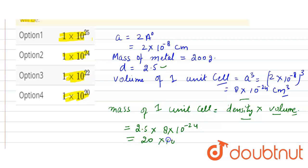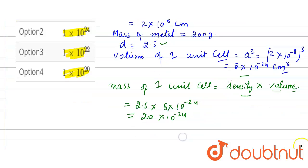So from here we get 20 × 10^-24. So now number of unit cells in 200 gram, unit cells in 200 gram metal